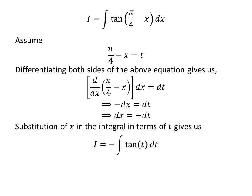Substituting pi upon 4 minus x by t and differential of x by minus differential of t in the integral, i gives us i is equal to minus the integral of tangent of t with respect to t. We know the integral of tangent of t is minus natural log of the absolute value of cosine of t. So i is equal to minus of minus natural log of absolute value of cosine of t plus capital C, where capital C is the arbitrary constant of the indefinite integral. Never forget to add this constant.